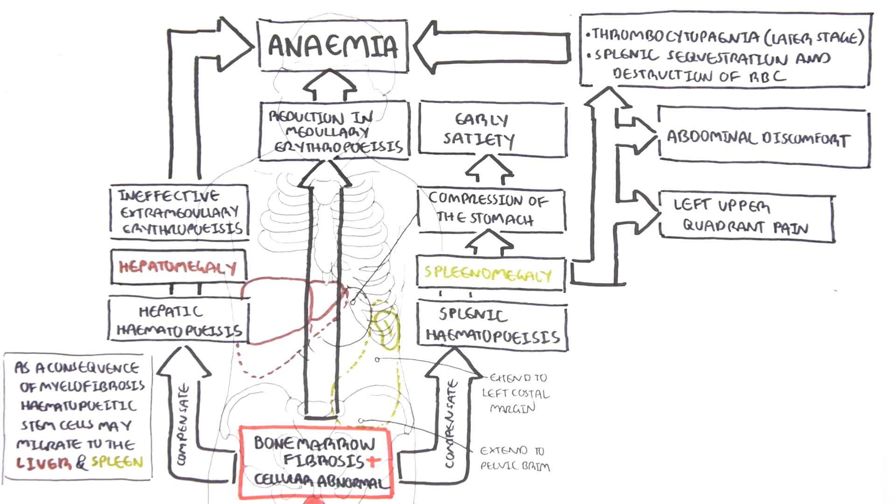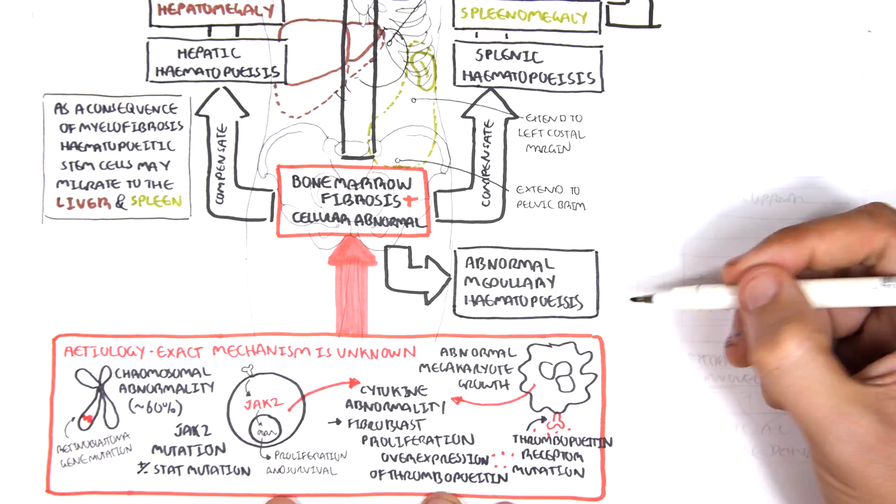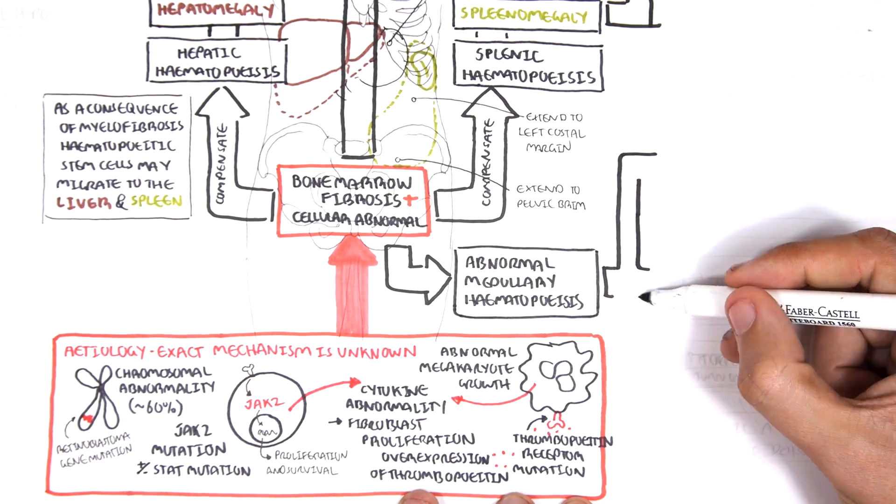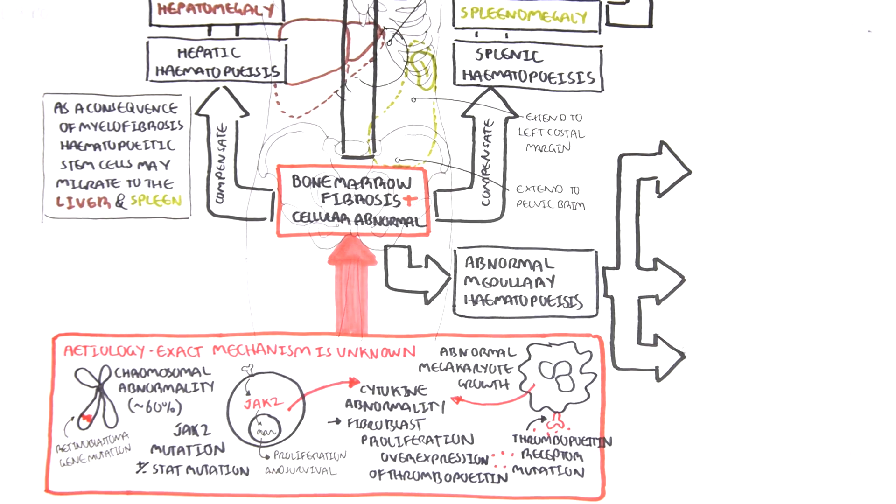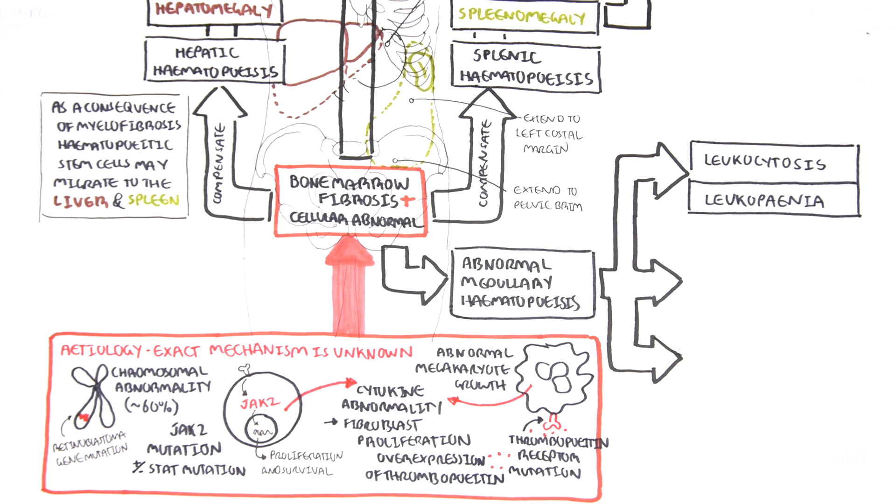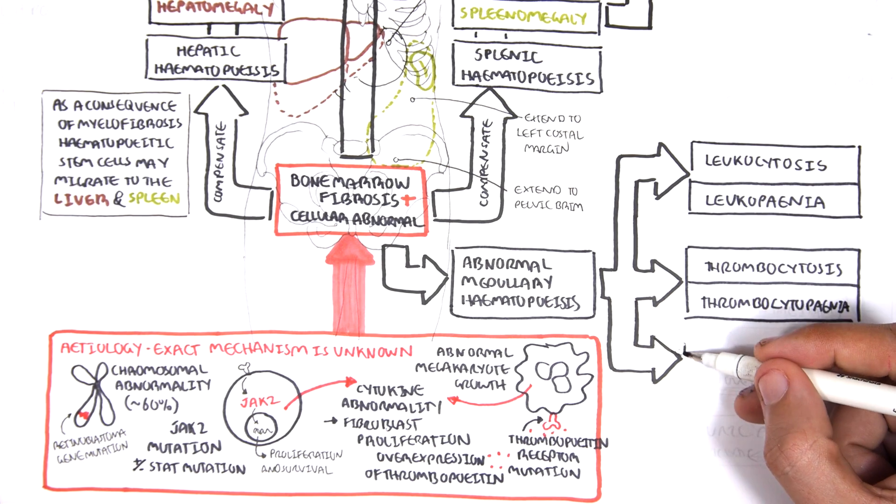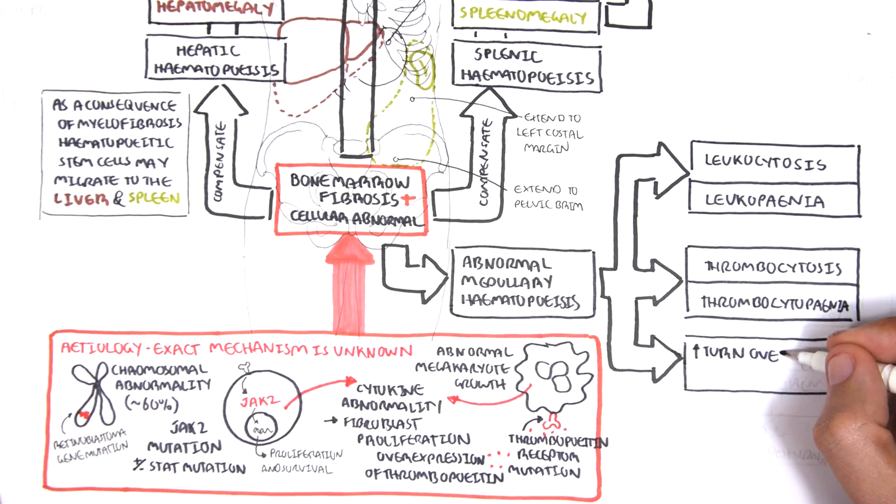Going back to the bone marrow fibrosis, as mentioned, you get abnormal medullary hematopoiesis, which contributes to anemia. But this abnormal medullary hematopoiesis can also lead to leukocytosis or leukopenia, so increase in leukocytes or decrease in leukocytes. It can also cause thrombocytosis or thrombocytopenia, so a lot of platelets or reduced number of platelets. Thrombocytopenia is more of a common feature in late stage of the disease. The abnormal medullary hematopoiesis means that there will be more abnormal cells being produced, and this means that more cells will be destroyed, and so there will be an increase in cell turnover.